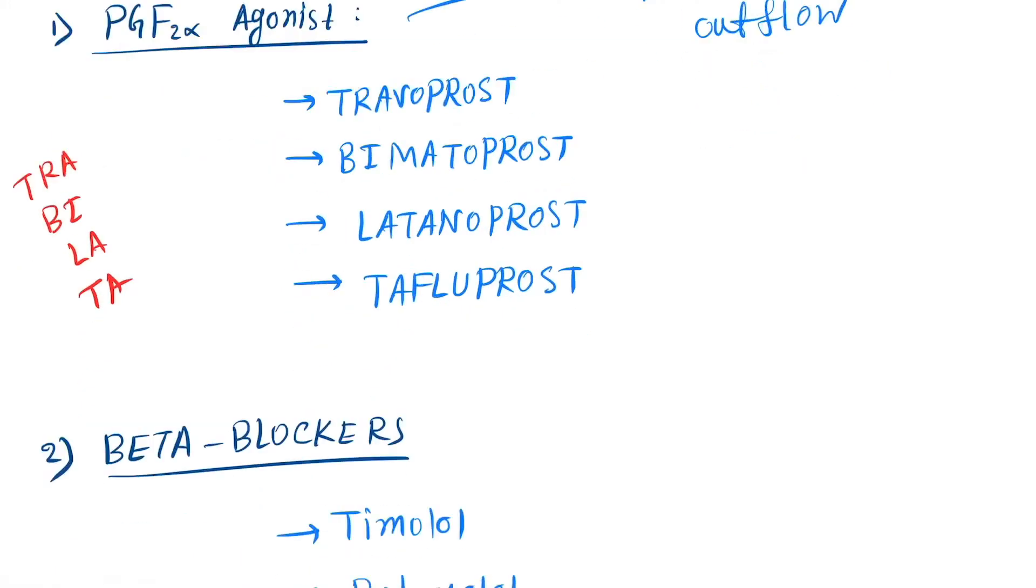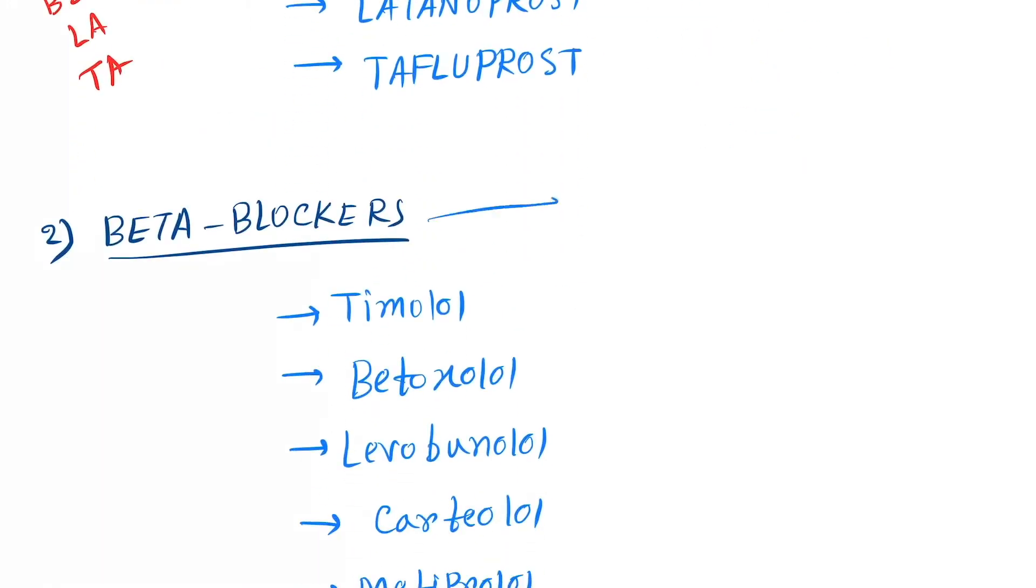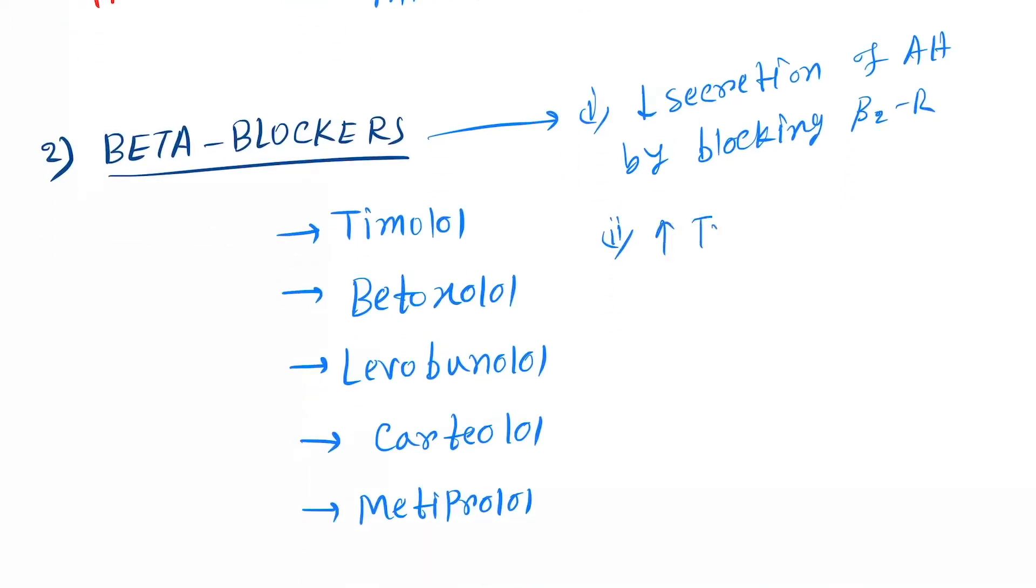Next is beta blockers. They act by mainly two mechanisms. First one is to decrease secretion of the aqueous humor by blocking beta-2 receptors. And the second function is to increase the trabecular flow.